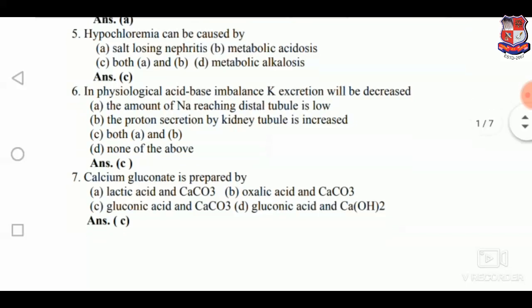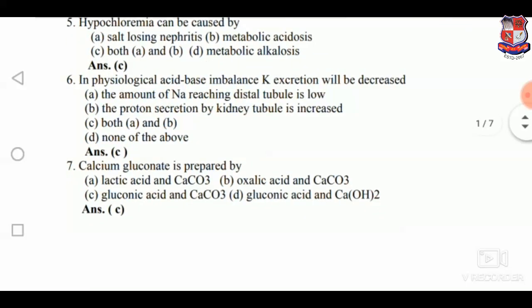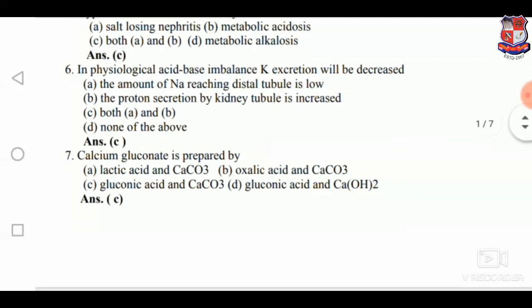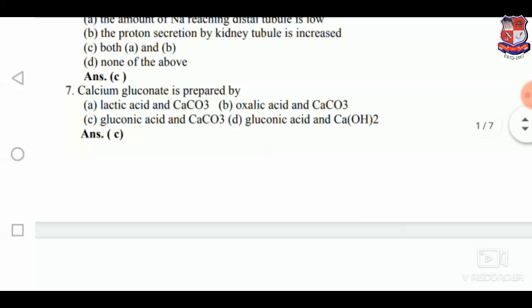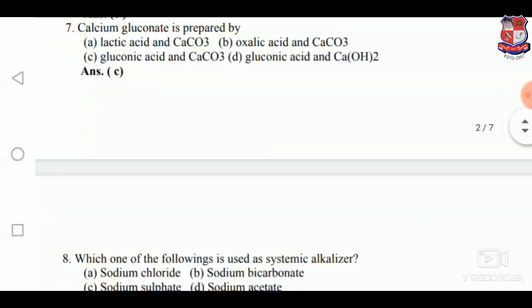In physiological acid-base balance, potassium excretion will be decreased by C — both: the amount of sodium reaching the distal tubule is low, and proton secreted by kidney tubule is low. Calcium gluconate is prepared by C — glucono-calcium and calcium carbonate.